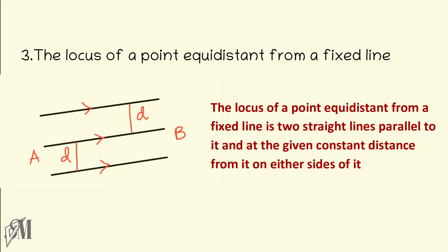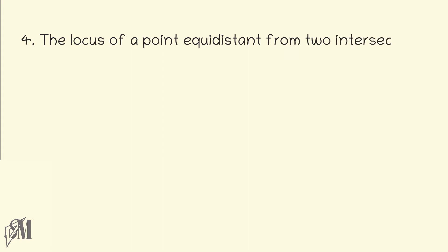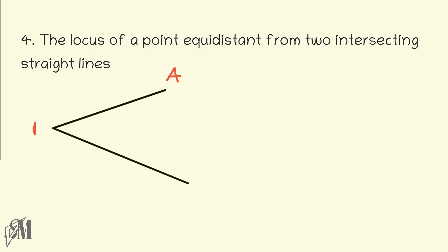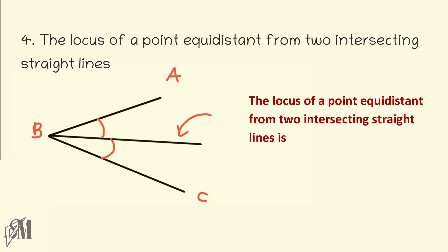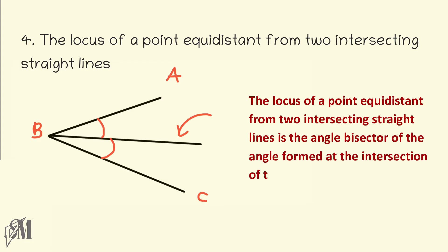The next locus is the locus of a point equidistant from two intersecting straight lines. I have taken two intersecting straight lines AB and BC, intersecting at B. The path of a point equidistant from both AB and BC will be the bisector of angle ABC. Drawing the bisector, the two angles formed are equal. The locus of a point equidistant from two intersecting straight lines is the angle bisector of the angle formed at their intersection.